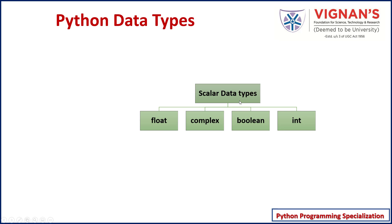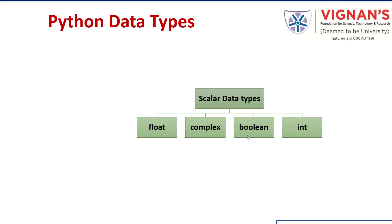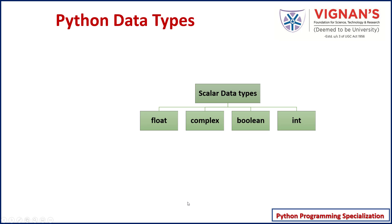Python supports four different data types to support storage of scalar data: int, float, complex, and boolean. These scalar data types allow us to store a single value. We'll see some details related to the scalar data types in this video.